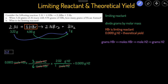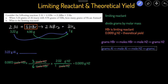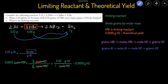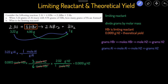Starting with 3.22 grams of aluminum, the conversion goes: grams of aluminum → moles of aluminum → moles of H2 → grams of H2. First, grams of aluminum goes on the bottom and moles of aluminum on top. Since we're converting between grams and moles, we use the molar mass: 1 mole of aluminum per 26.98 grams. Then we convert moles of aluminum to moles of H2.